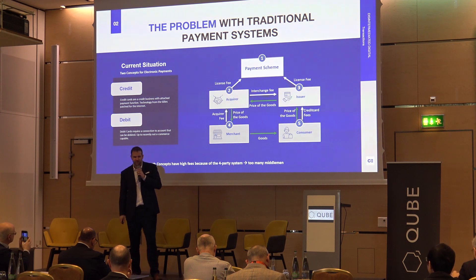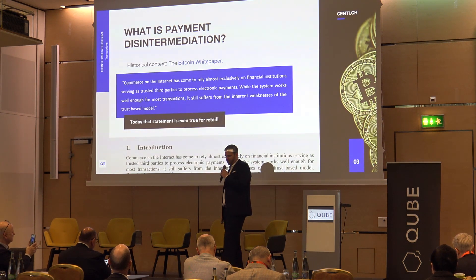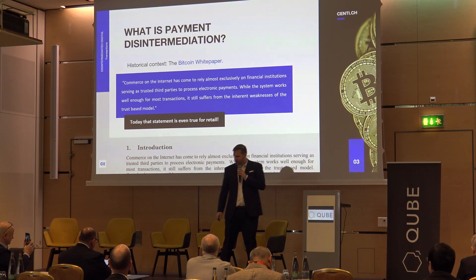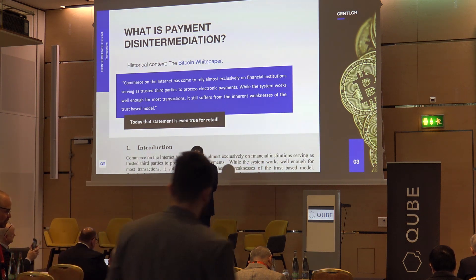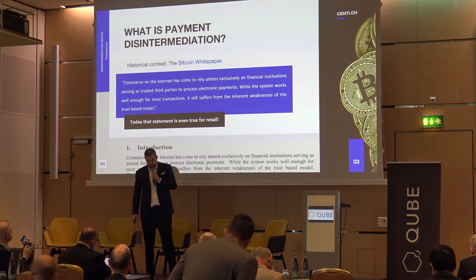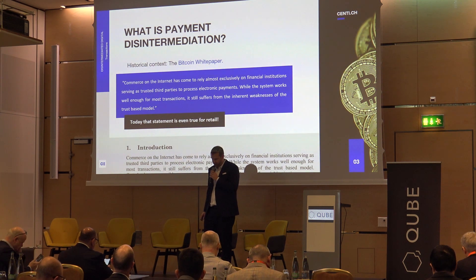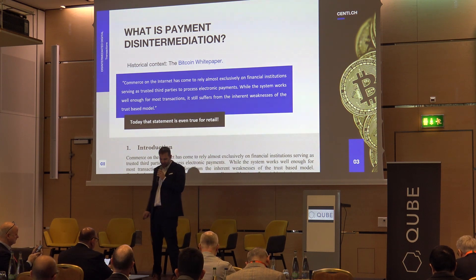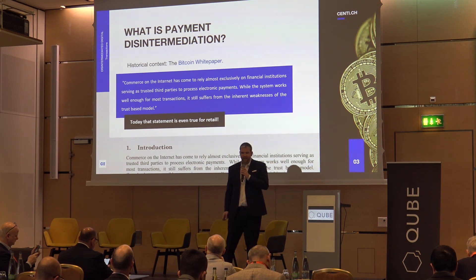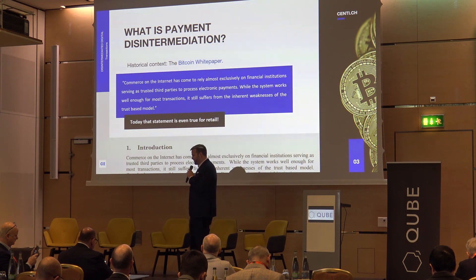Those fees are always paid by the businesses, but I still pay them in my consumer prices. If those fees didn't exist for businesses, my consumer prices might be lower. In historic context about payment disintermediation, this is literally the first sentence out of the Bitcoin white paper: 'Commerce on the internet has come to rely almost exclusively on financial institutions serving as trusted third parties to process electronic payments. While the system works well enough for most transactions, it still suffers from the inherent weakness of the trust-based model.' The author goes on to write about dispute handling, complaint processes, and how it makes things very inefficient for smaller and especially casual cash payments.